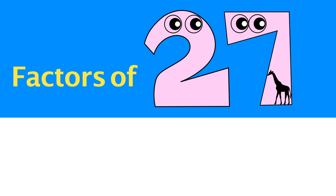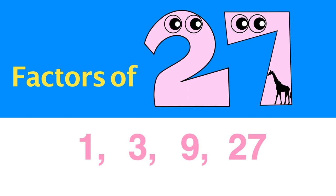Let's find the factors of 27. Starting from 1: 1 times 27 is 27. 2 cannot divide 27. 3 times 9 is 27. 4 cannot divide 27, and neither can bigger numbers. The factors of 27 are 1, 3, 9, and 27.